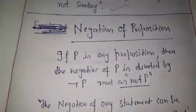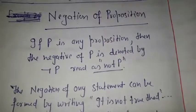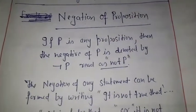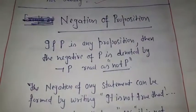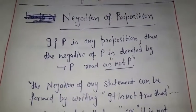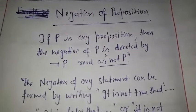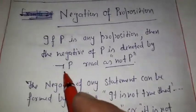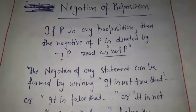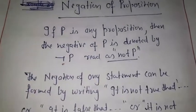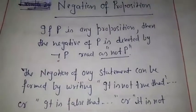Now the next topic is the negation of the proposition. We have studied before that the negation operation performs the negative statement. If we need to represent any statement in negative form, we add 'not' to it — that is, we negate it. If P is any proposition, then the negation of P is denoted by not P, read as 'not P'. This is the not operator — the negation operator.